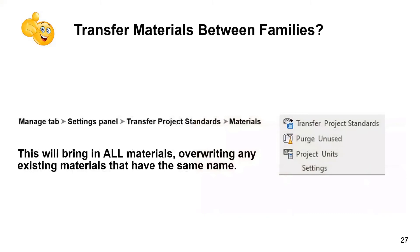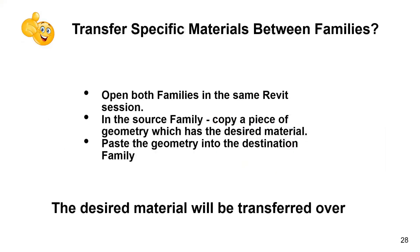When you have two families with different materials and want to transfer materials between them, you can use Transfer Project Standards — but this brings in all materials and will overwrite any with the same name in the destination file. If you want to transfer specific materials between families, open both families and copy-paste a piece of geometry with that material into the new file.